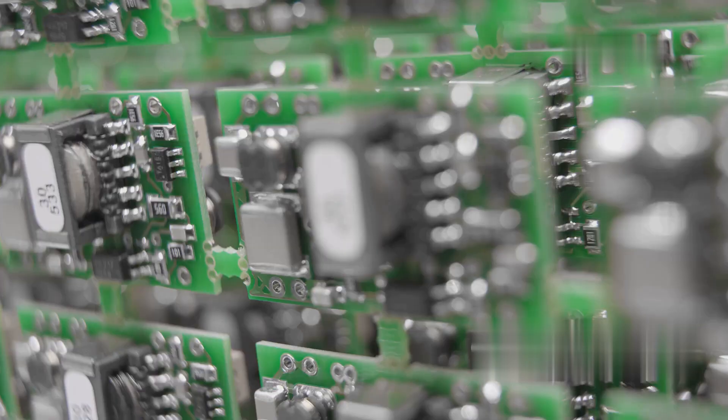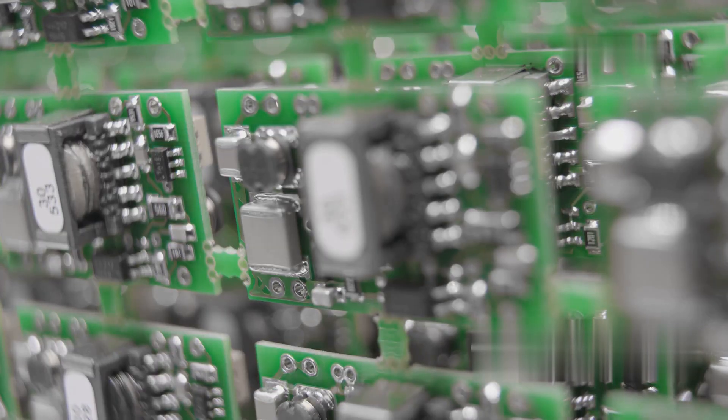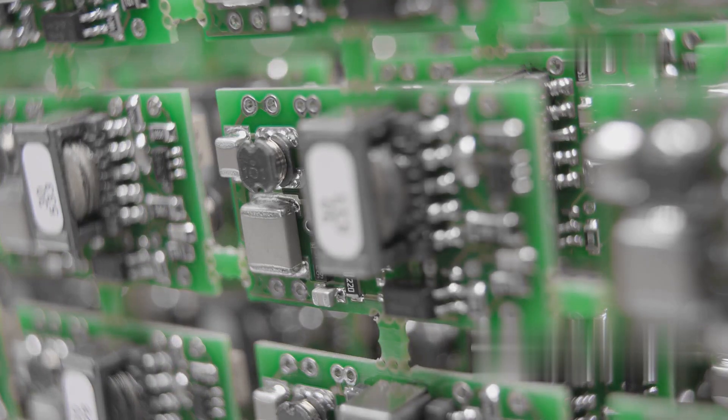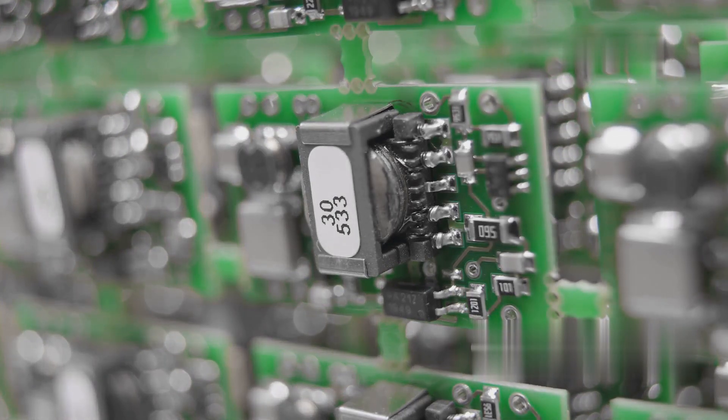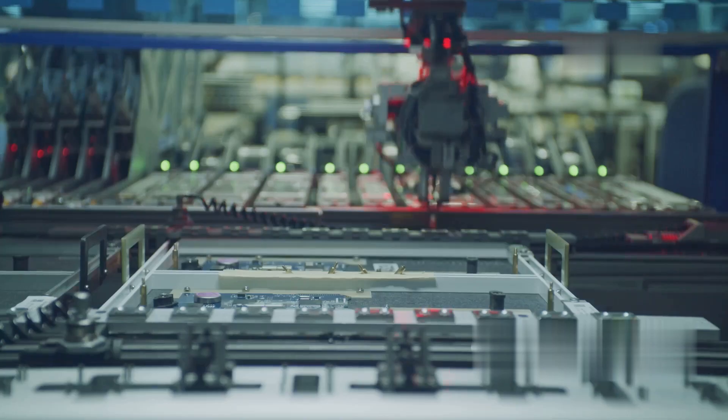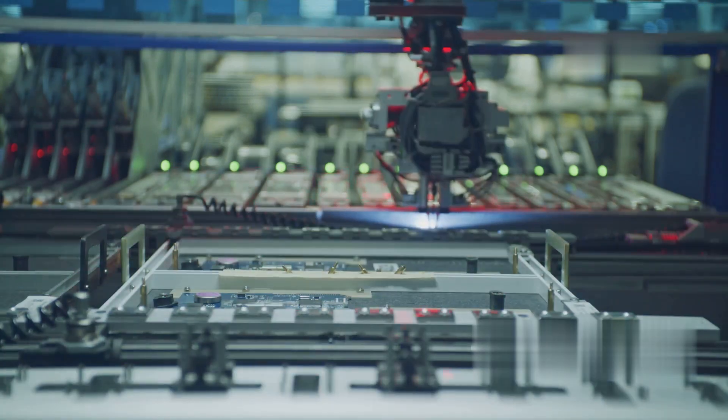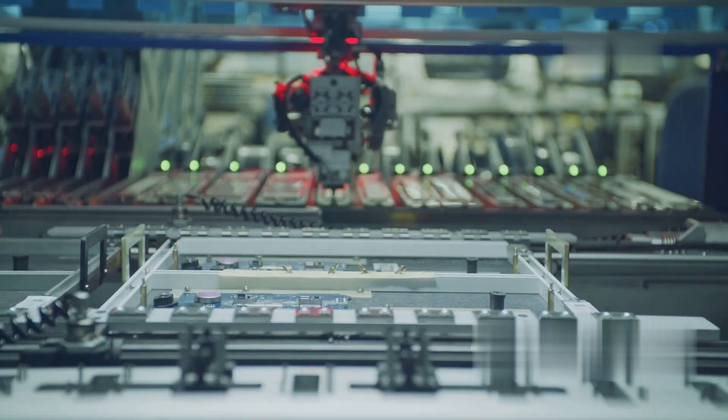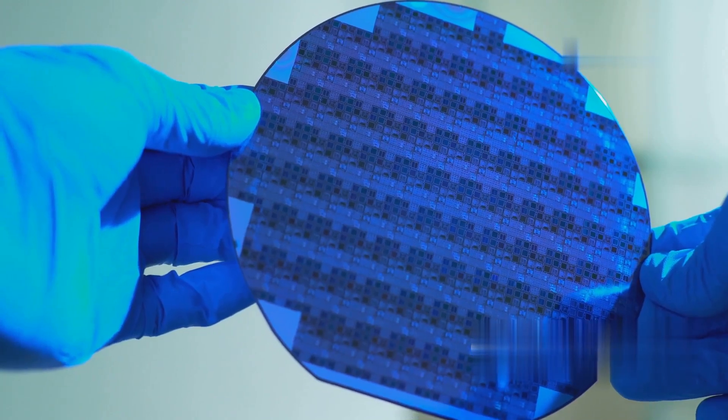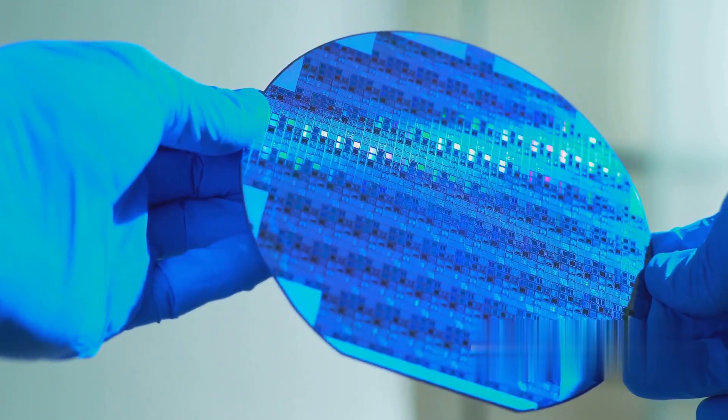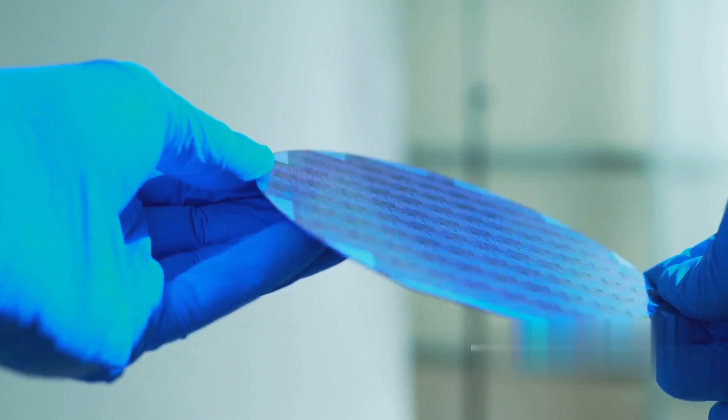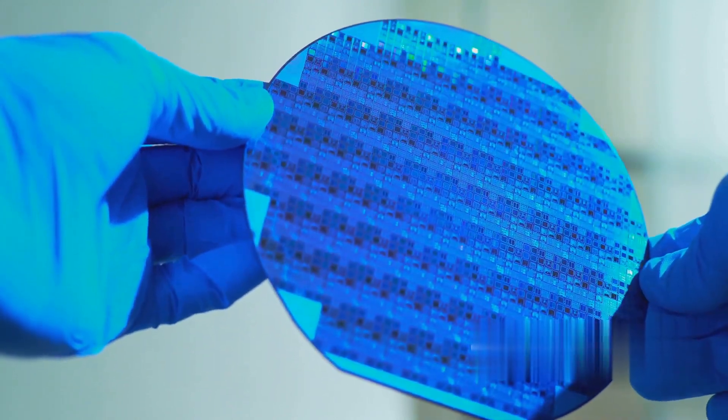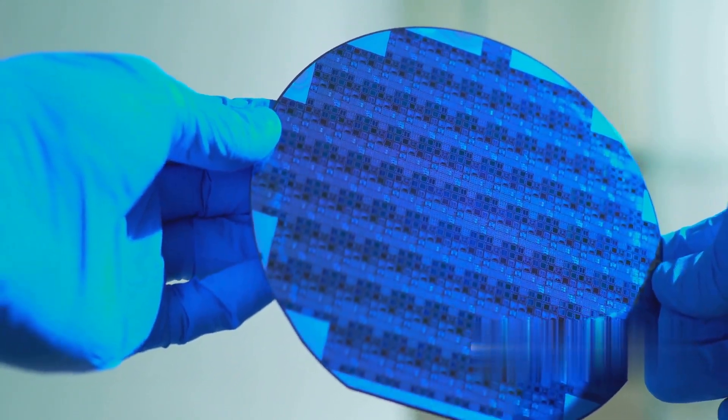These microscopic switches control the flow of electricity, forming the fundamental building blocks of integrated circuits, or chips, that power our digital lives. Transistors act as gatekeepers, allowing or blocking the passage of electrical current. By combining millions, even billions of these transistors on a single chip, engineers create intricate circuits that perform complex calculations, store information, and control electronic devices.